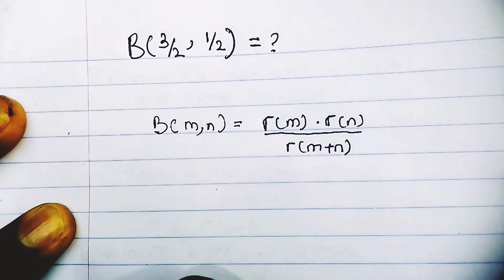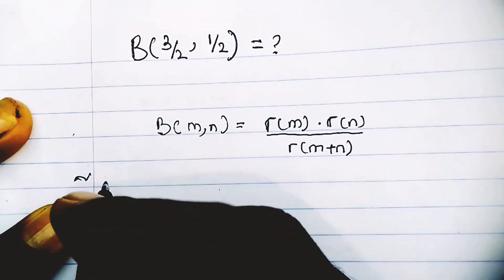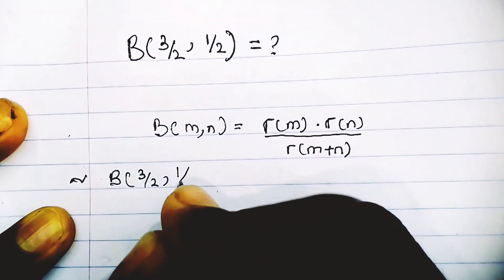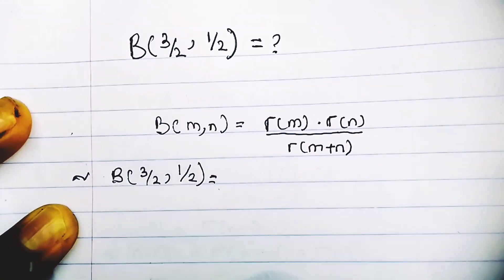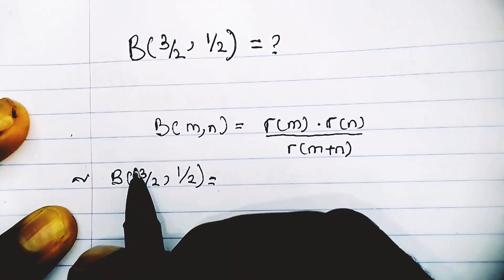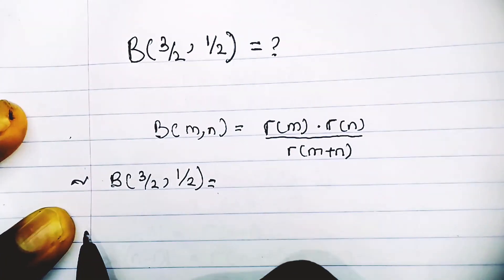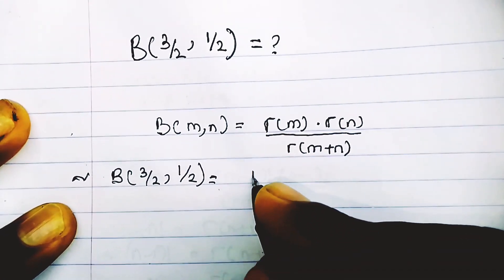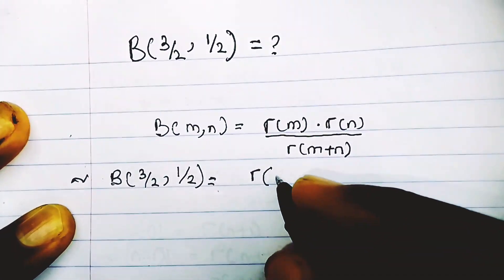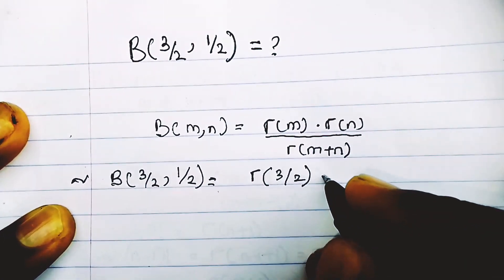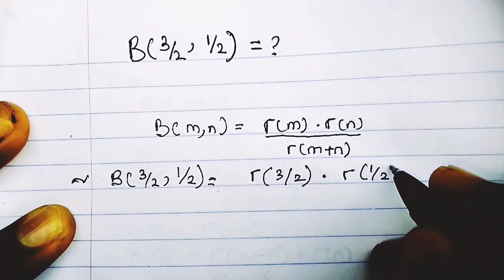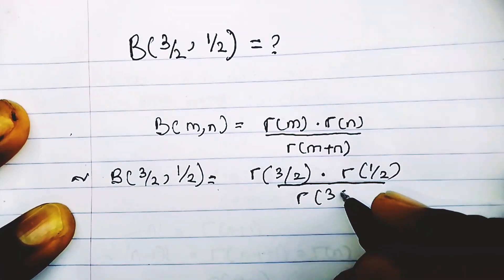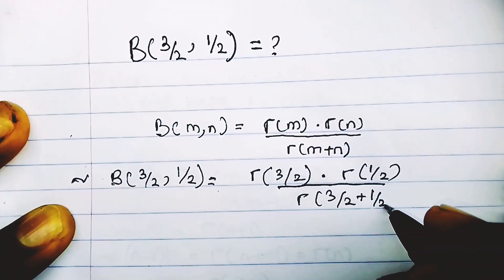We have to solve Beta(3/2, 1/2). Using our formula, where m = 3/2 and n = 1/2, we substitute to get: Γ(3/2) · Γ(1/2) divided by Γ(3/2 + 1/2).